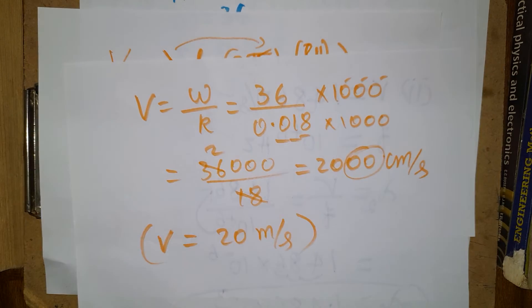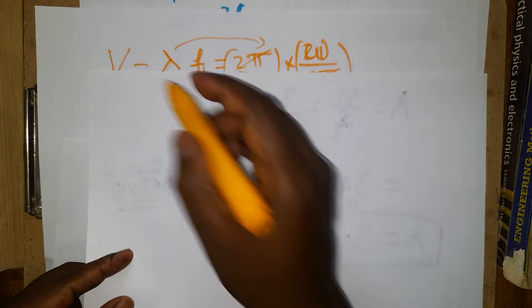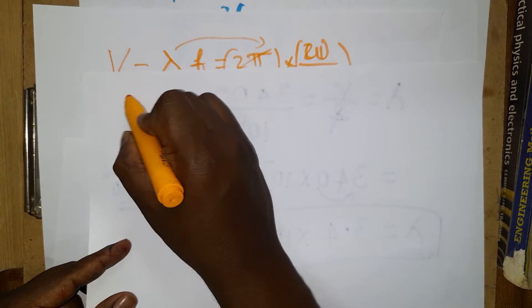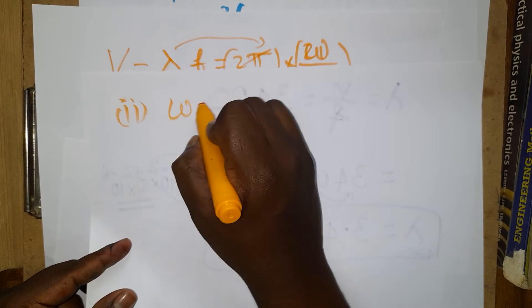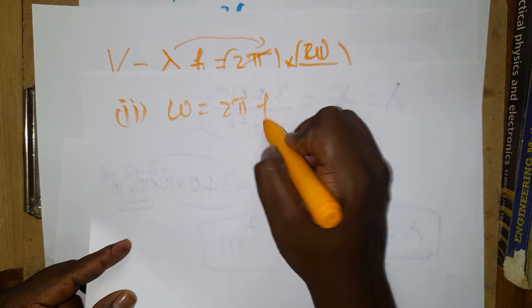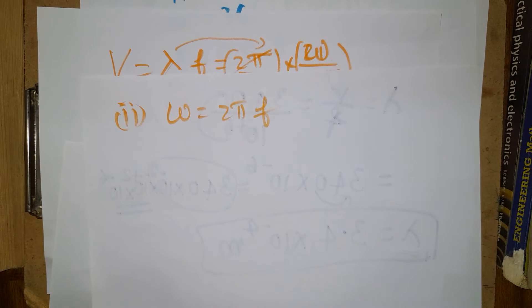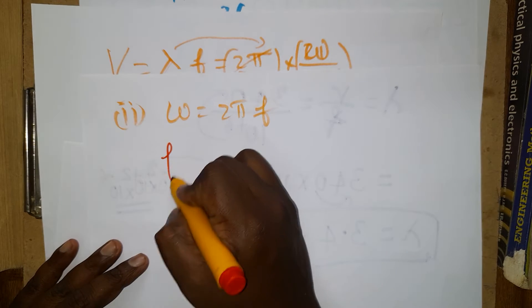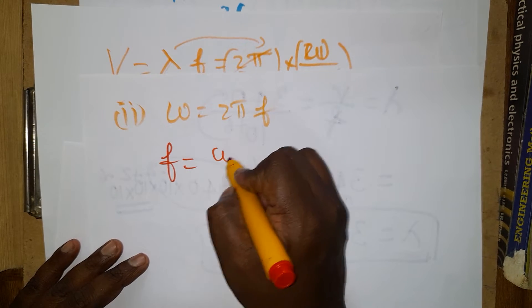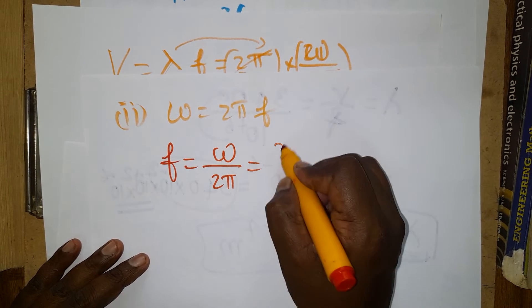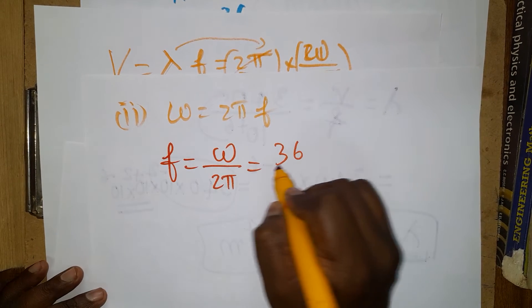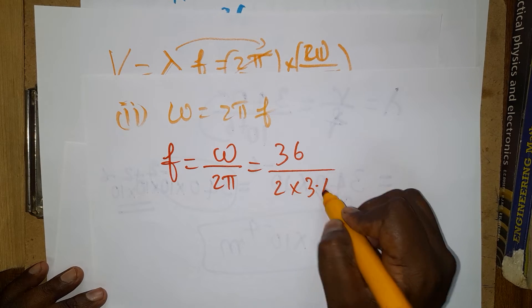Second question: find the frequency. We know ω = 2πf, so f = ω/2π. Substituting: ω = 36 and π = 3.14, so f = 36/(2 × 3.14) = 36/6.28.